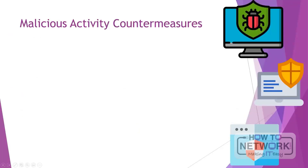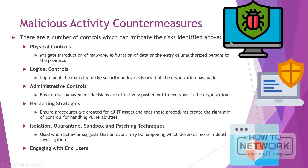There are a number of controls which can mitigate the risks of malicious activity. Physical controls can mitigate the introduction of malware, exfiltration of data, or the entry of unauthorized persons into your premises and thereby into contact with your information systems infrastructure. Logical controls implement the lion's share of the security policy decisions that the organization has made — these configure hardware, operating systems, network and application level security features. Administrative controls ensure that risk management decisions and information security decisions that management and leadership have made are effectively pushed out to everyone in the organization and drive how physical and logical security controls are put into effect.